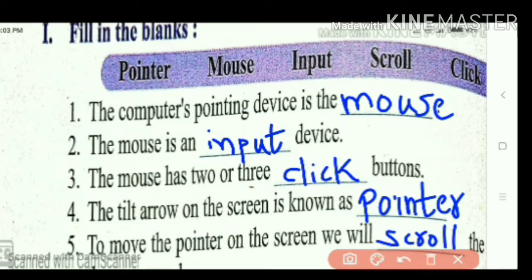So take this screenshot. The computer's pointing device is the mouse. The mouse is an input device. The mouse has 2 or 3 click buttons. The tilt arrow on the screen is known as pointer. To move the pointer on the screen, we will scroll the mouse.